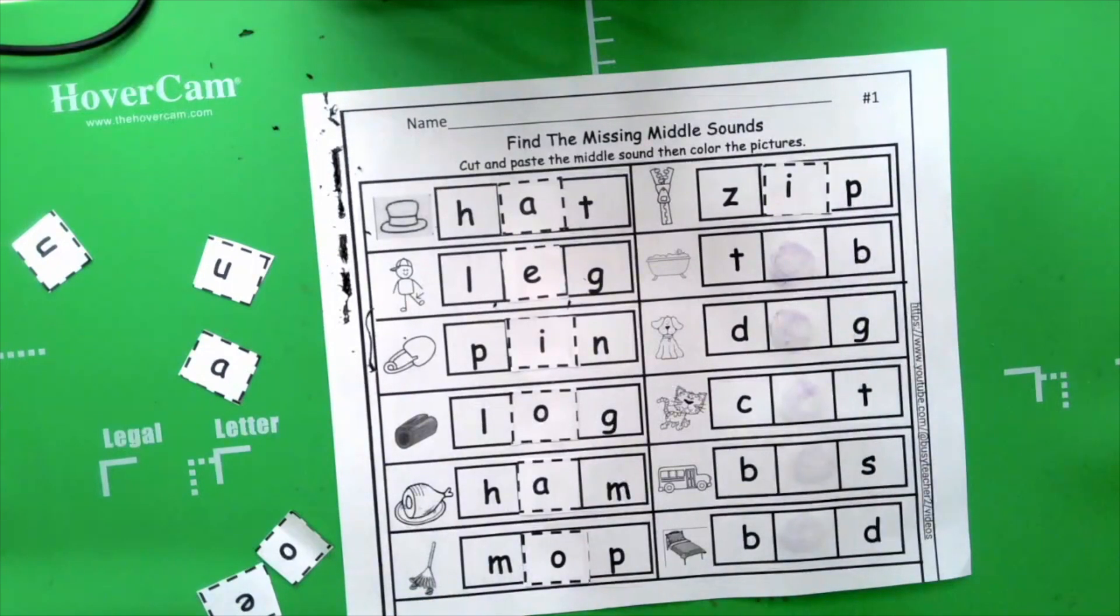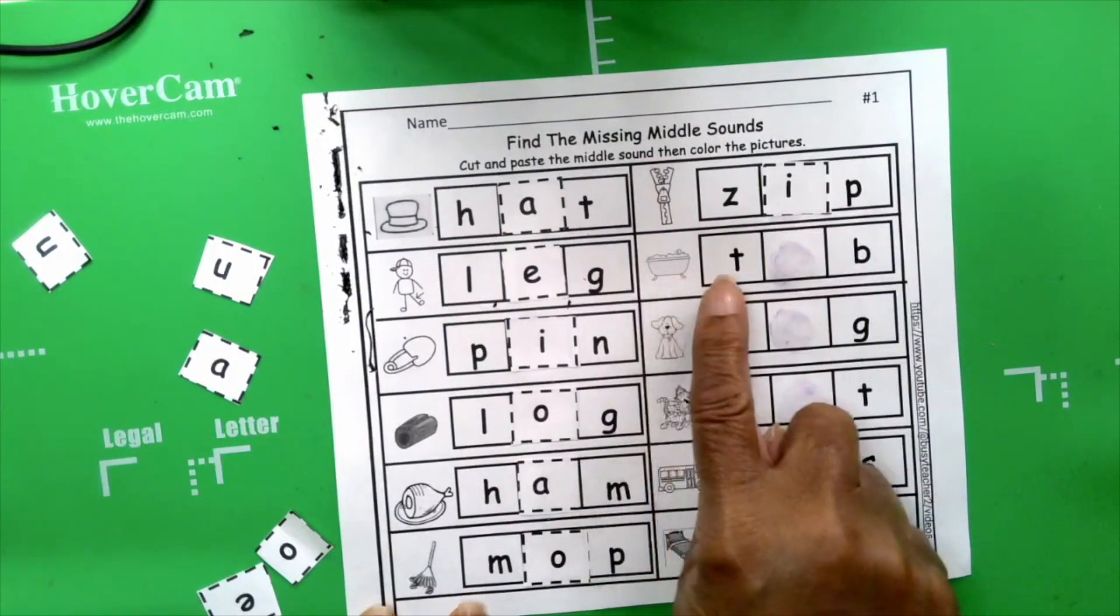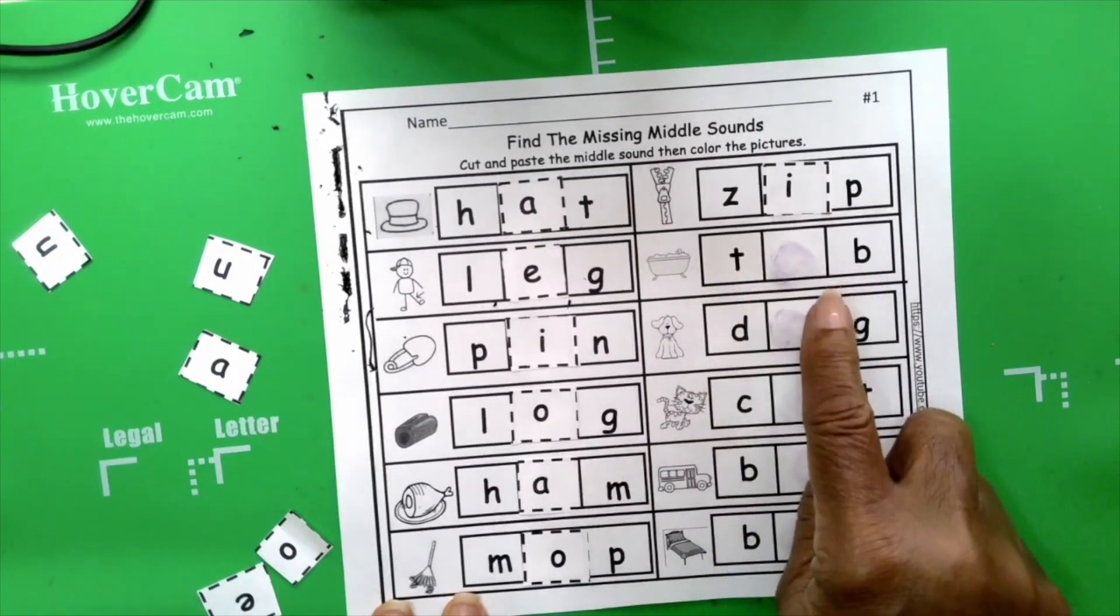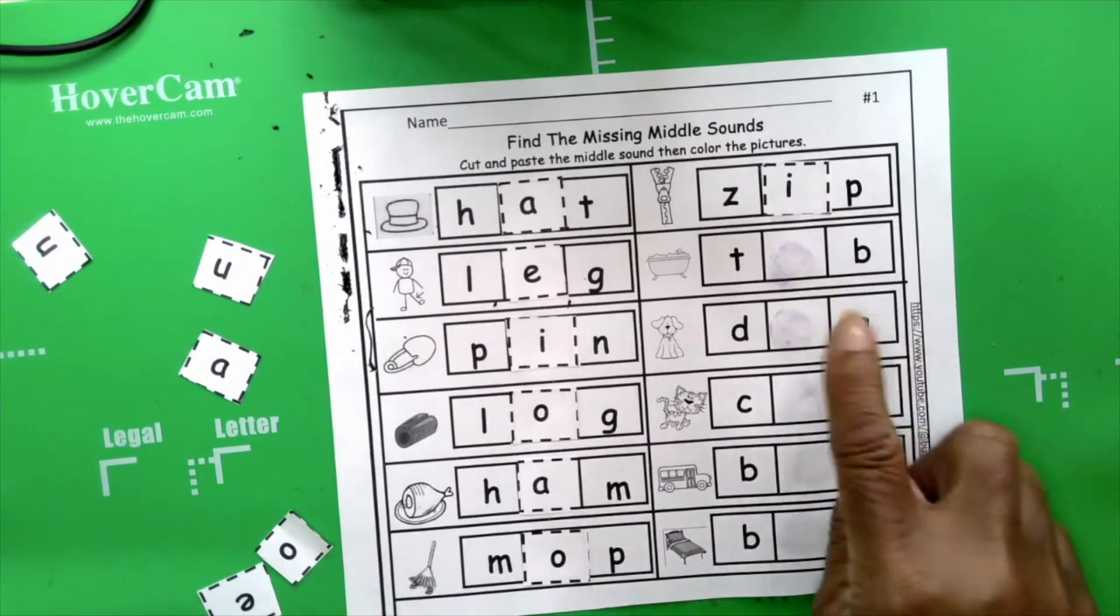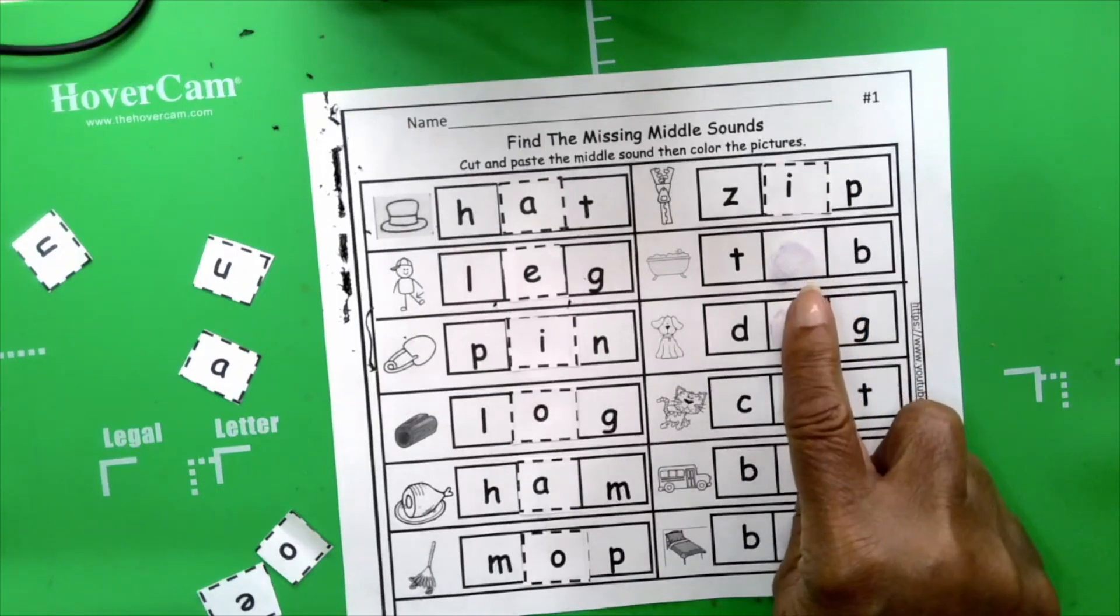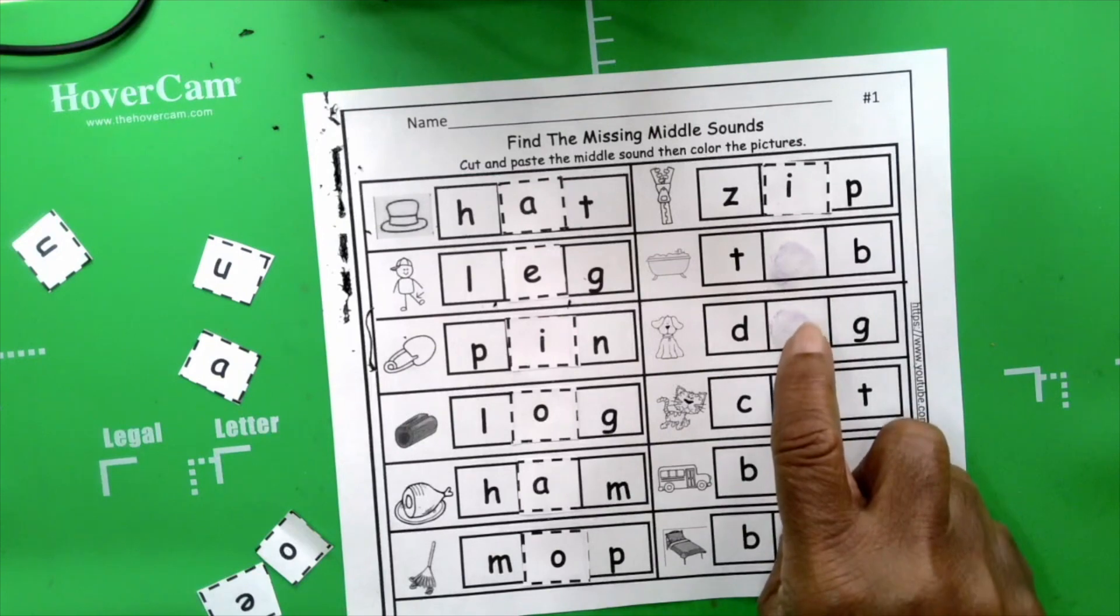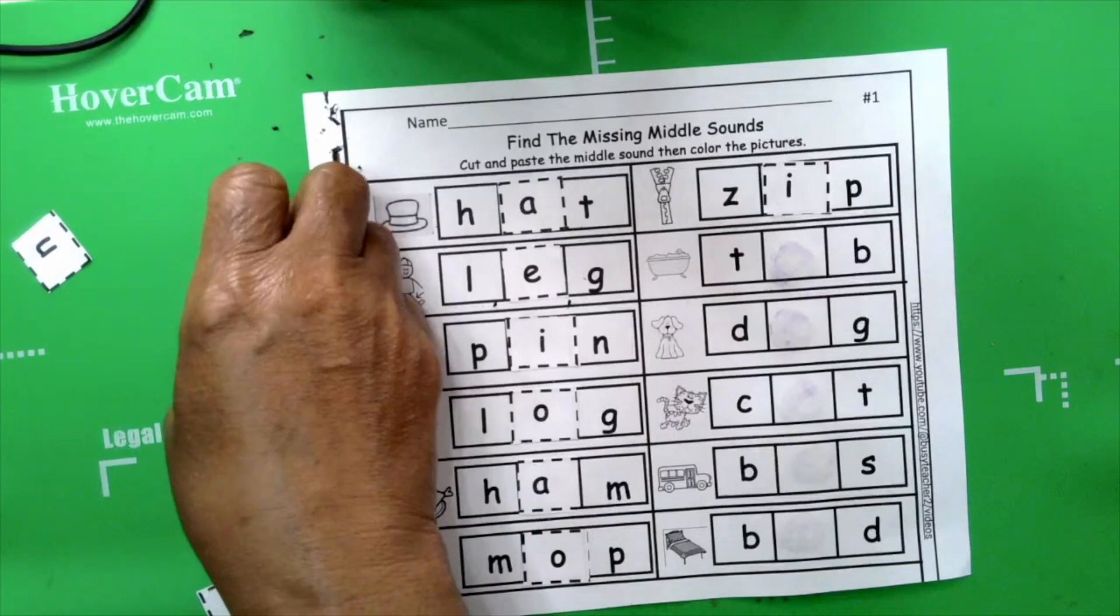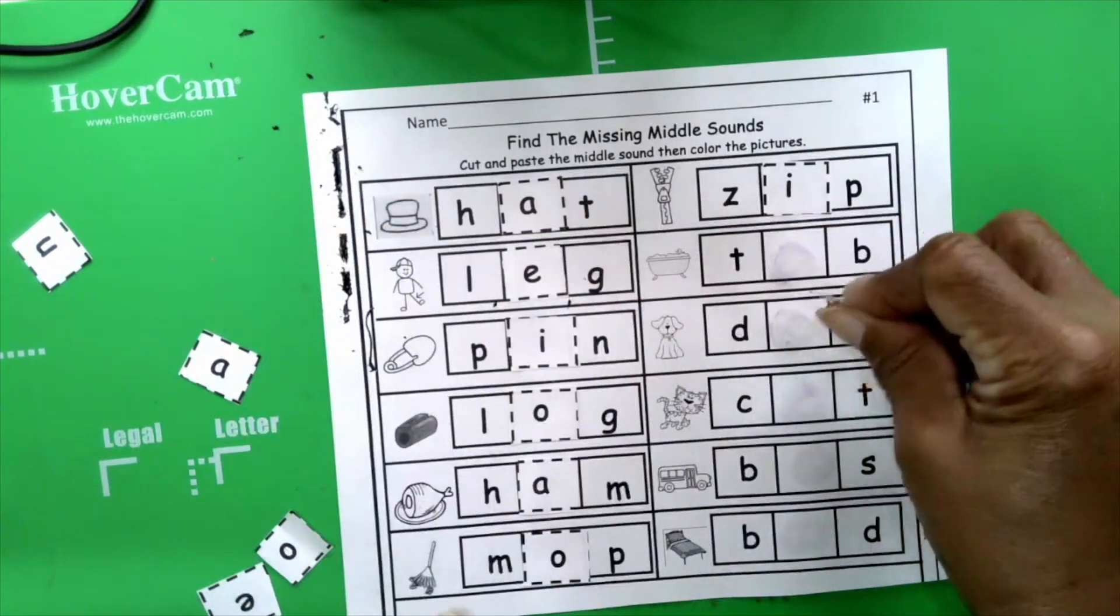Tub. Tub. T-uh. B. Tub. Uh. Okay. Uh. What's the uh sound? We haven't used that one yet. Uh. Exactly. U. U, uh. Uh.